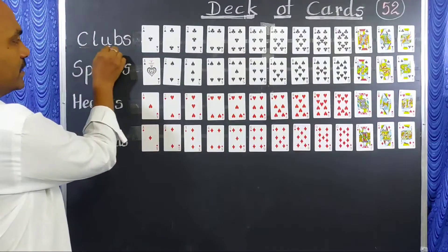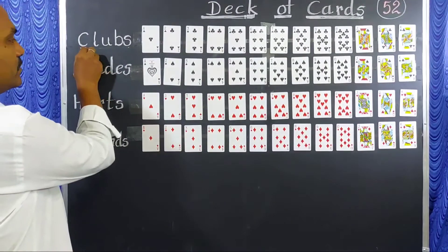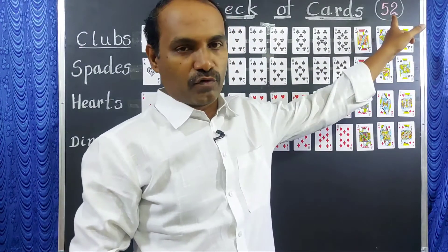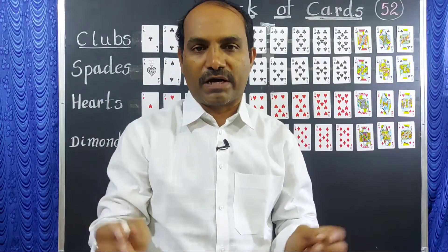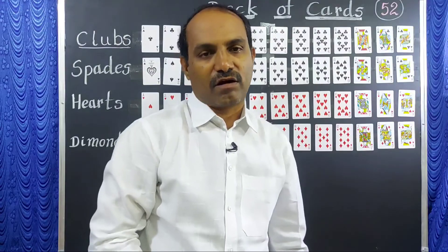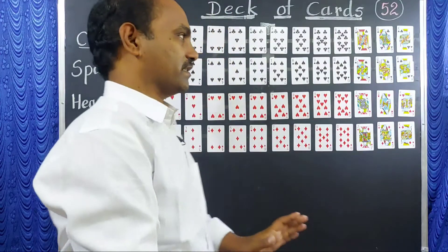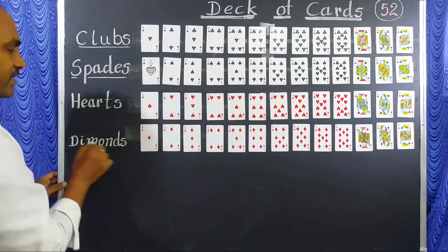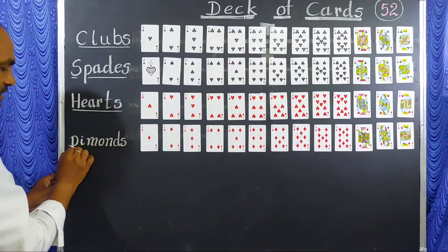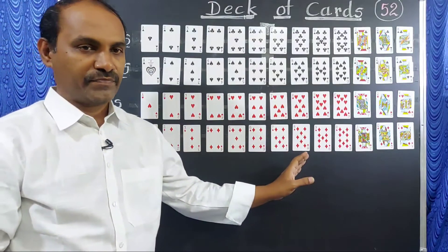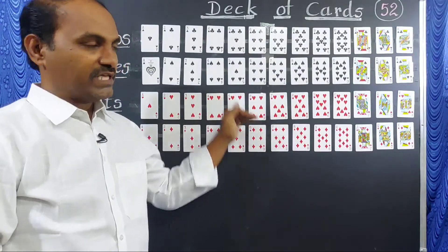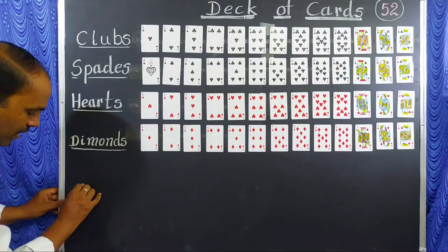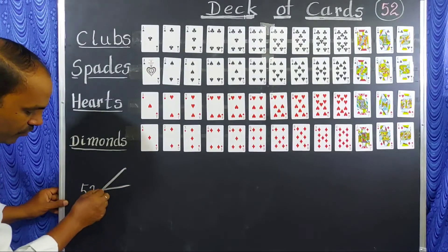The first suit is clubs. When you divide 52 into 4 parts, each part has 13 cards. So clubs has 13 cards, spades has 13 cards, hearts has 13 cards, and diamonds has 13 cards — divided into 4 suits, each suit 13 cards.